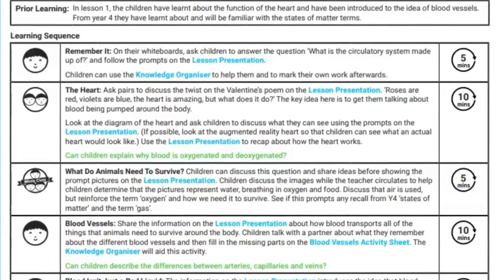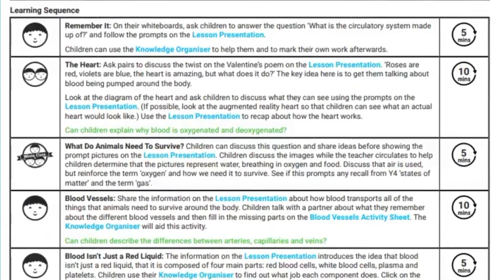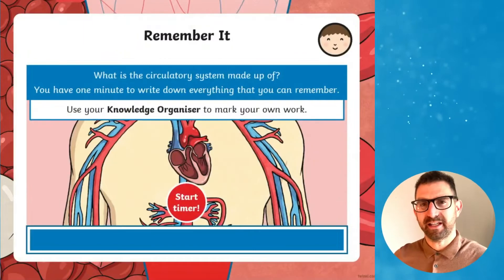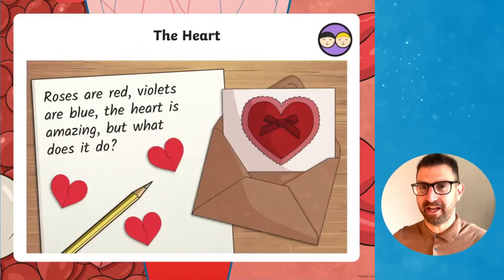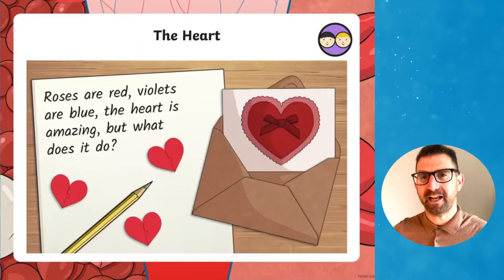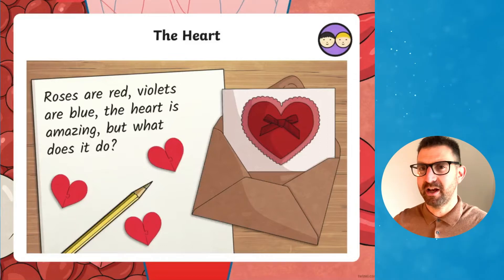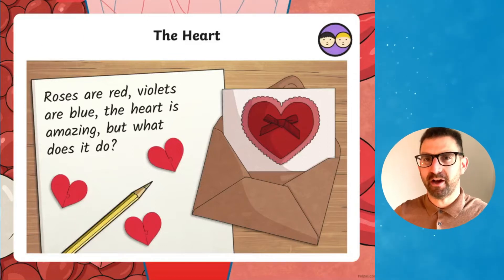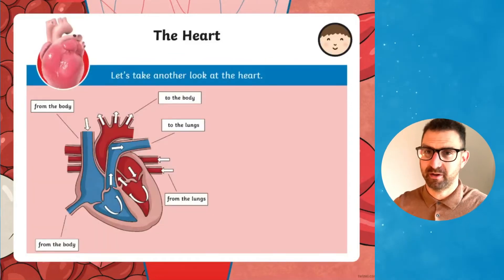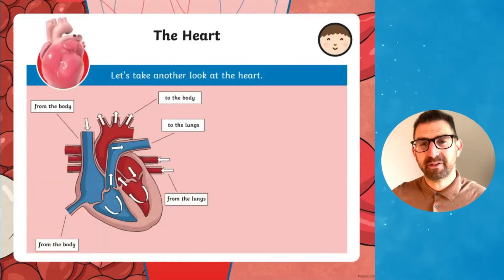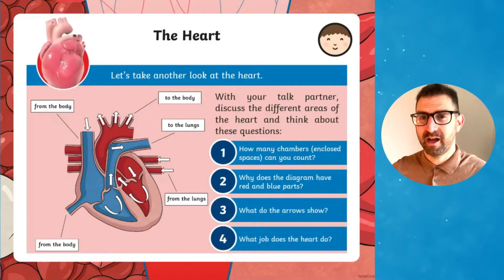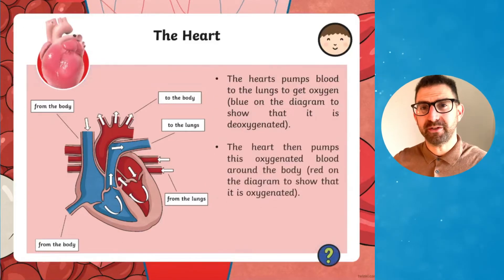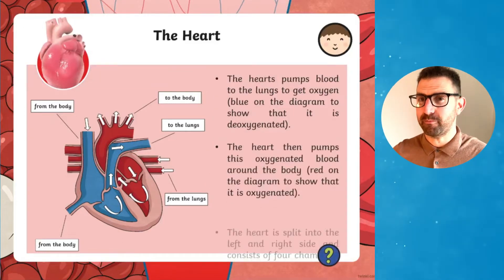The lesson plan includes the objectives, success criteria, list of resources, key vocabulary, and a step-by-step learning sequence to follow alongside the resources included in this pack. This PowerPoint is a fantastic tool for introducing your key stage 2 students to the human circulatory system.